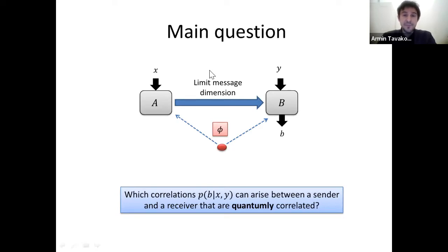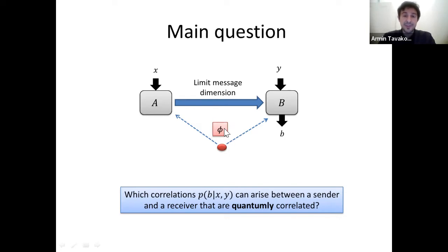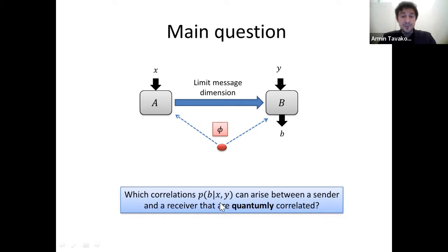The scenarios we are interested in look like this. A sender chooses from some classical data X, creates a quantum message of a limited dimension, sends it over the channel to a receiver, the receiver selects a measurement from some classical alphabet Y, and produces an outcome B. To assist the whole process, the parties may share a quantum source of correlations, that is some entangled state phi. The fundamental question is to characterize the set of predictions that quantum mechanics allows — specifically, what correlations P(B|X,Y) can arise when the sender and receiver are quantumly correlated.